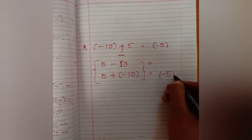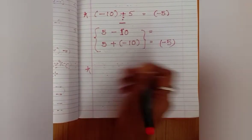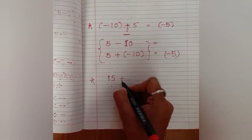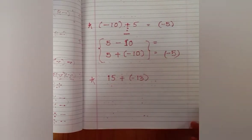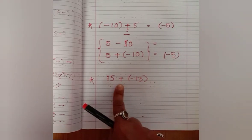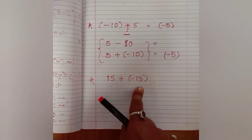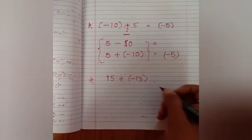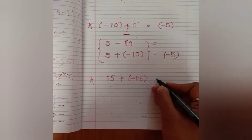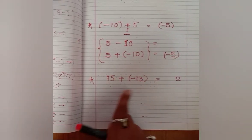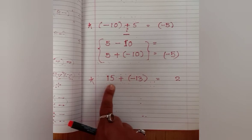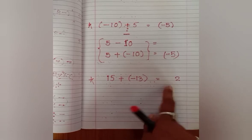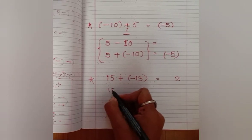Next example: fifteen plus minus thirteen. Again one is positive and one is negative. The operation is subtraction: fifteen minus thirteen equals two. The bigger number is fifteen and it is positive, so the answer is plus two — not minus two.